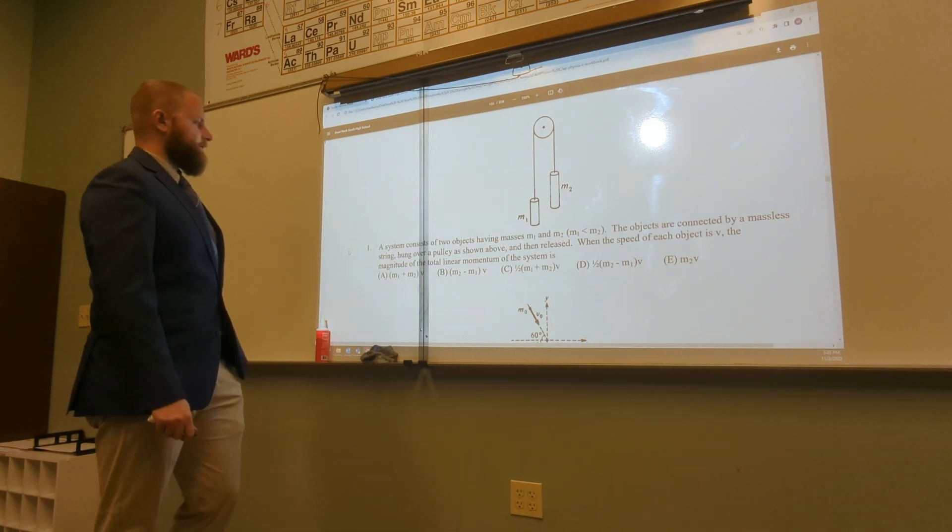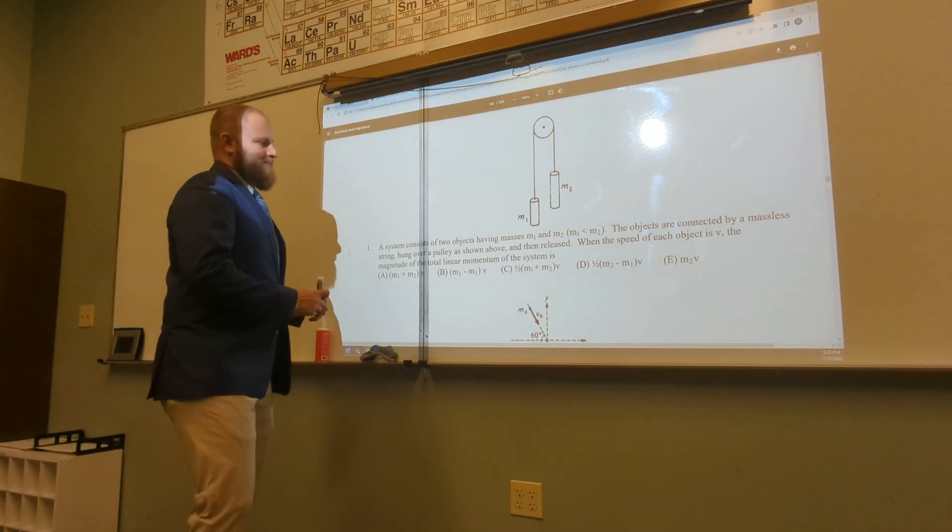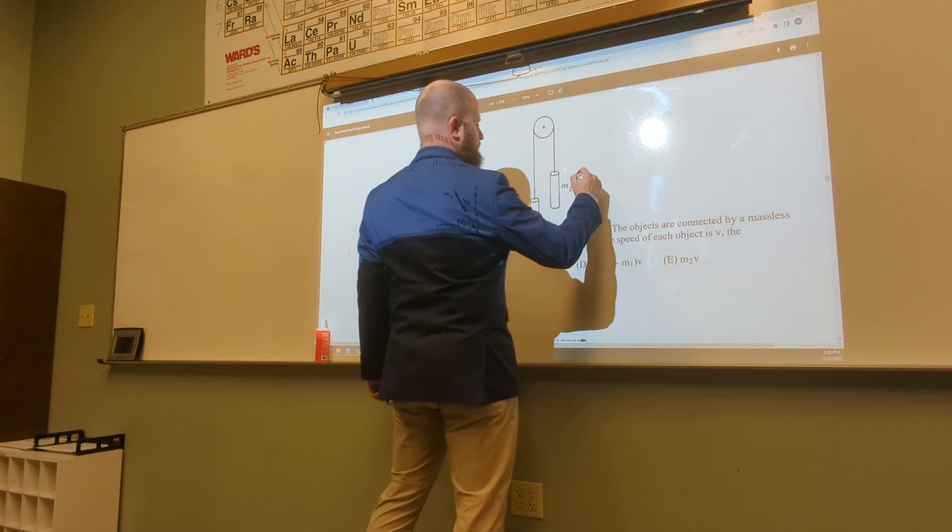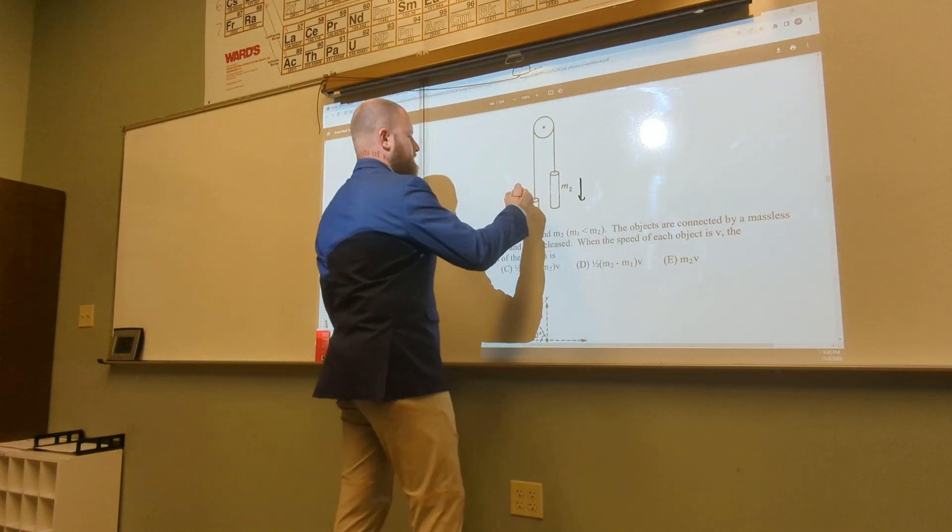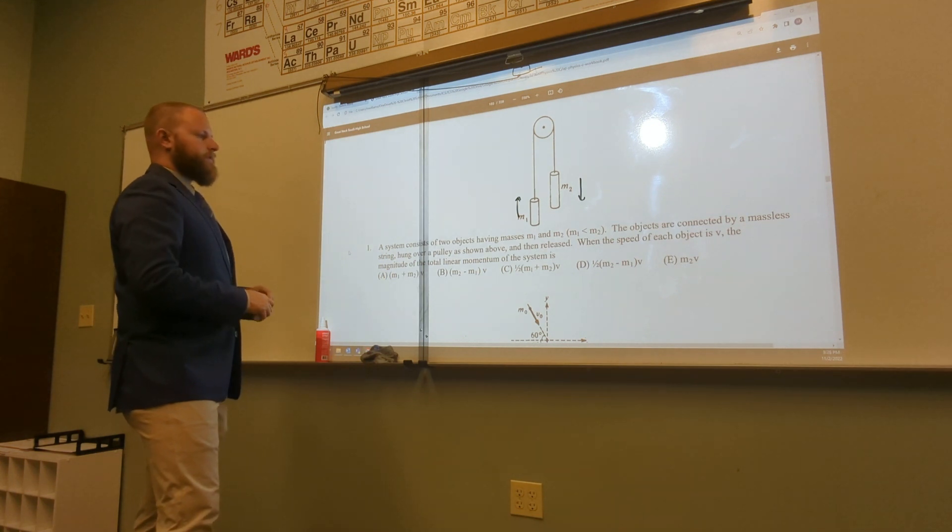A system consists of two objects having masses M1 and M2. M2 is bigger, so that means this one will be going down and this one will be going up. The objects are connected by a massless string hung over a pulley as shown and then released.